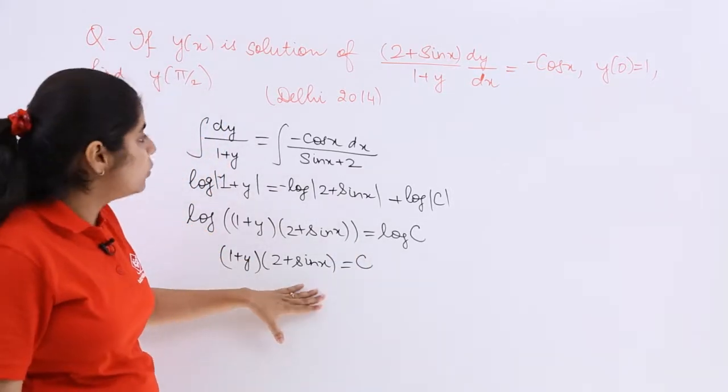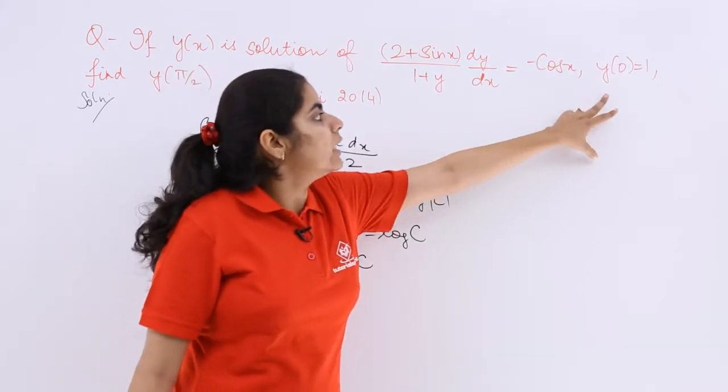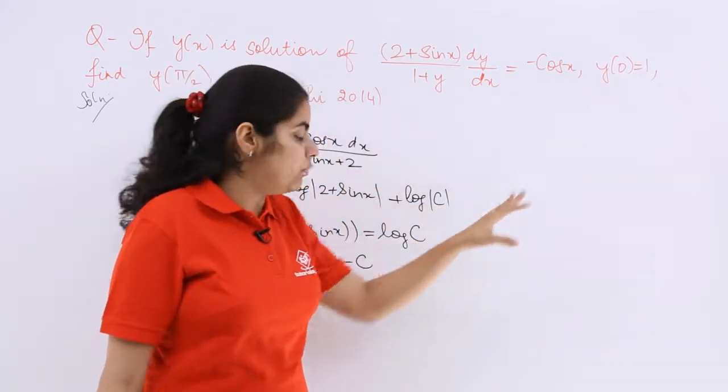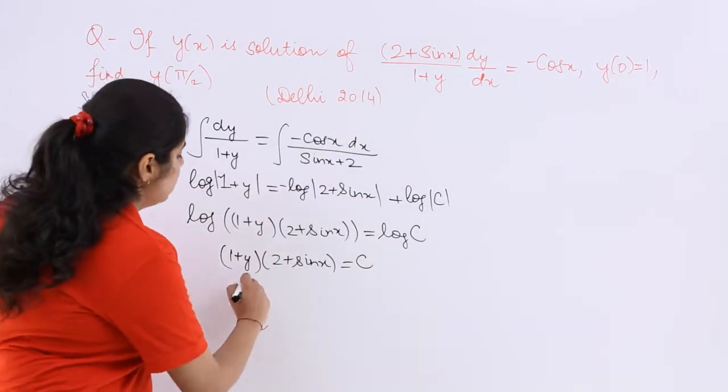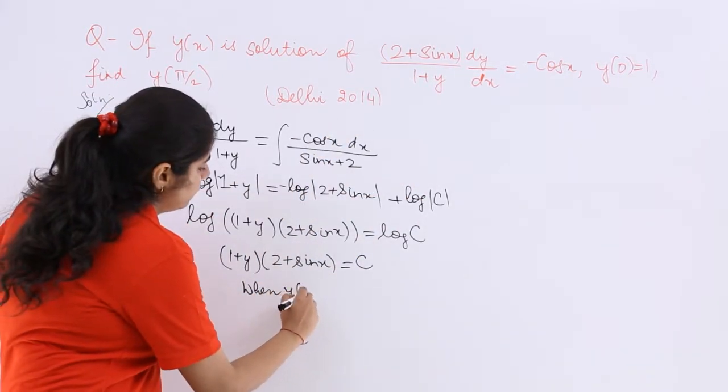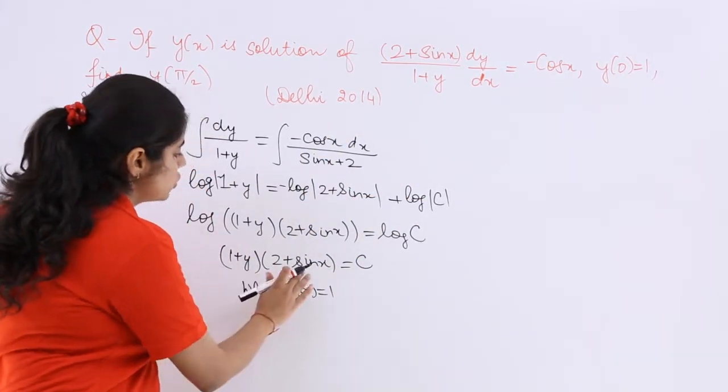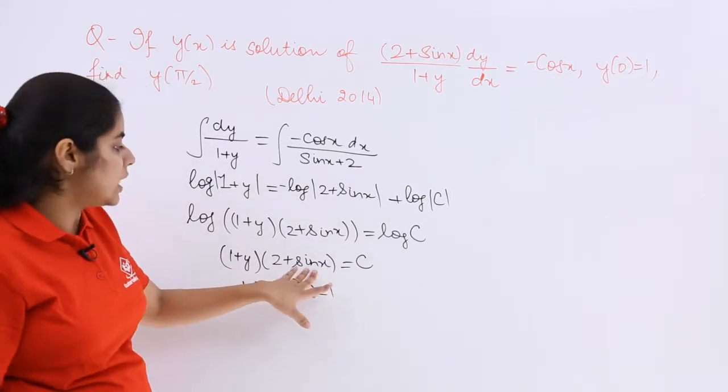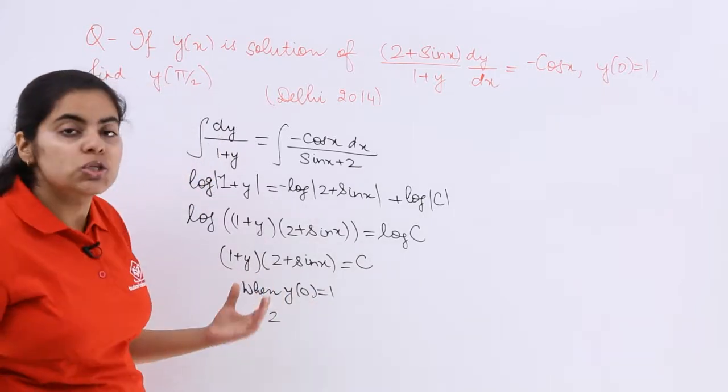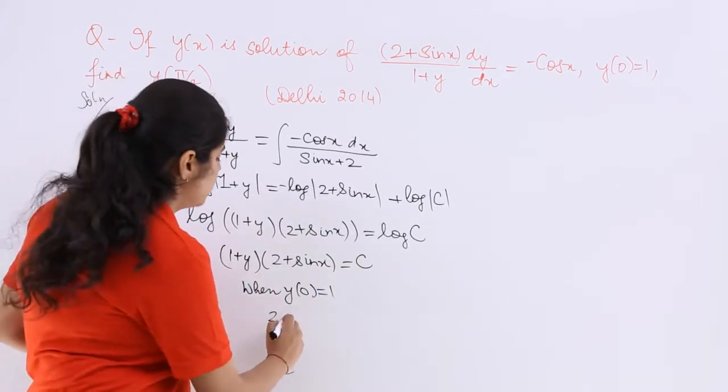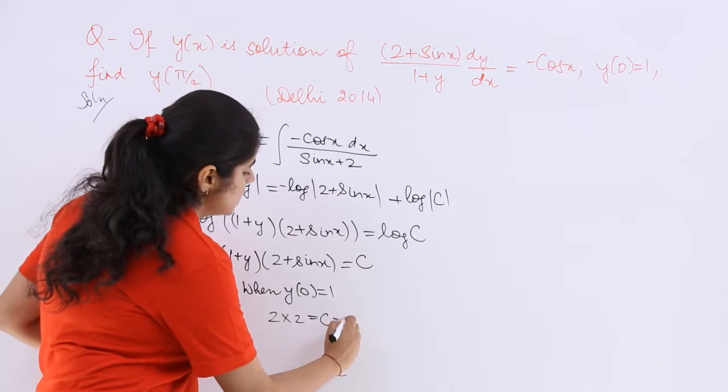Now what is left is, I know the strategy that this condition is given to me and this condition will help me in finding the unknown thing which is c. So when y of 0 is 1, that means x should be 0. So sin 0 is 0, so 2 is multiplied. And here when you put 1, so 1 plus 1 is 2.